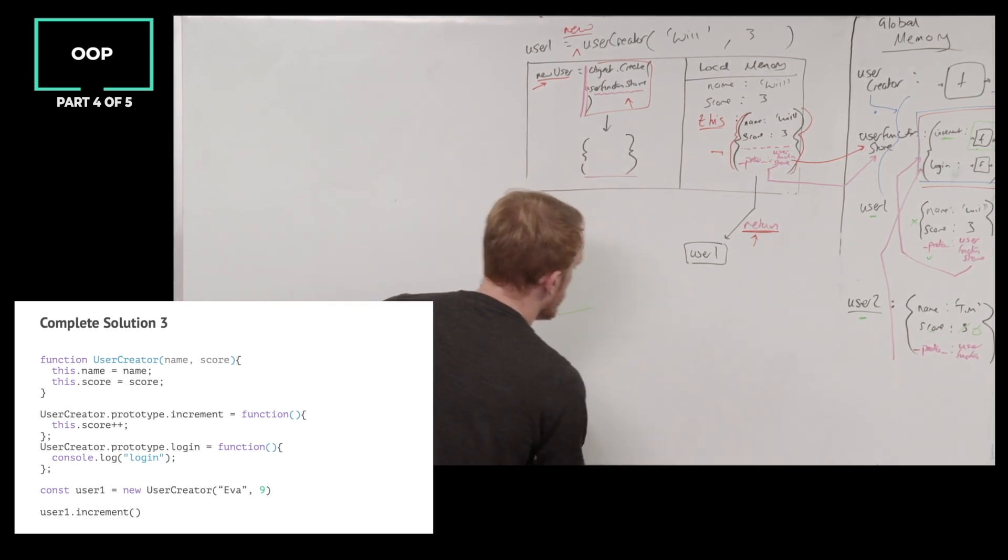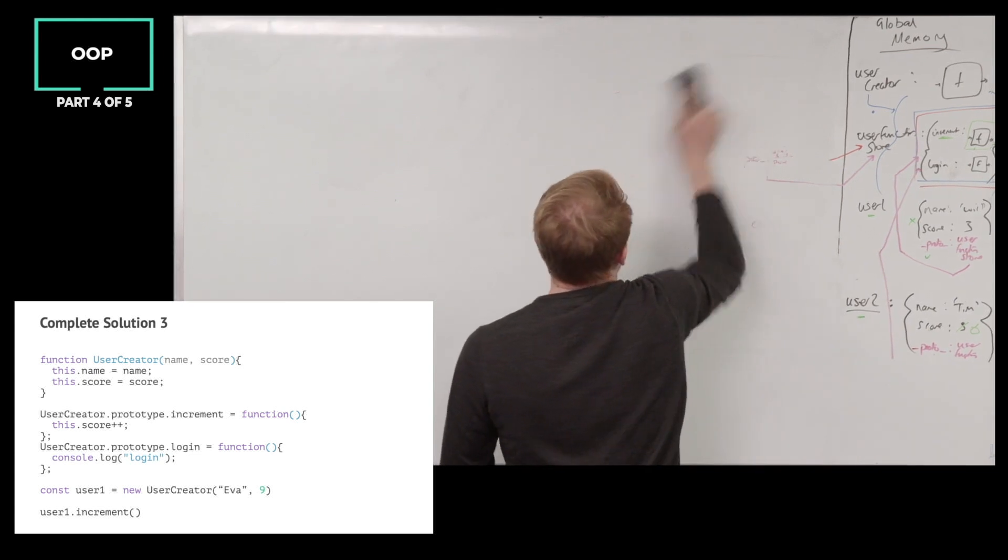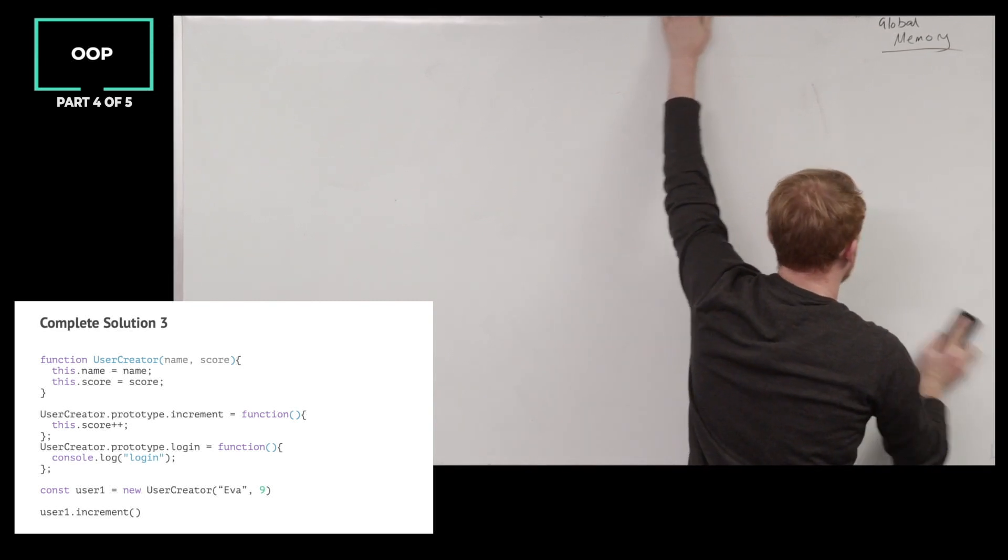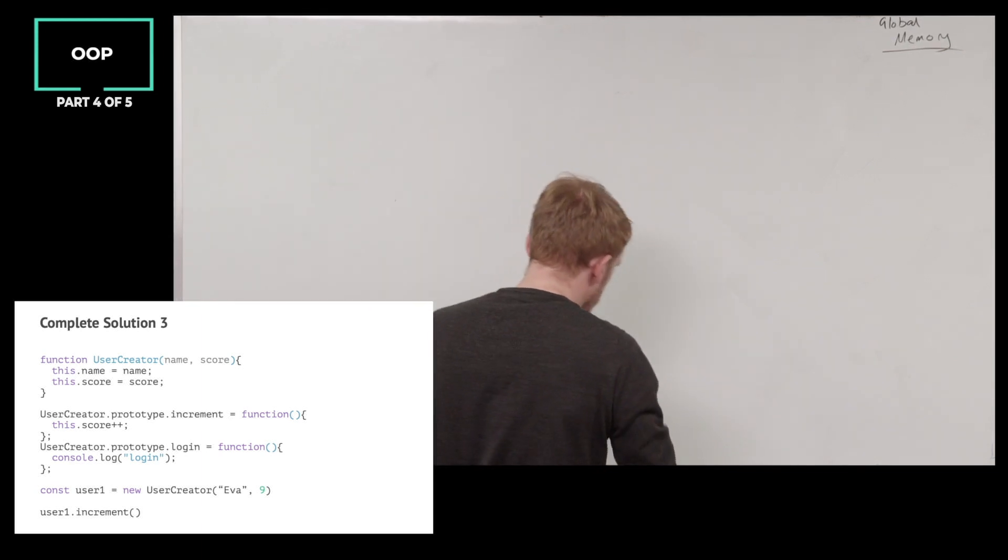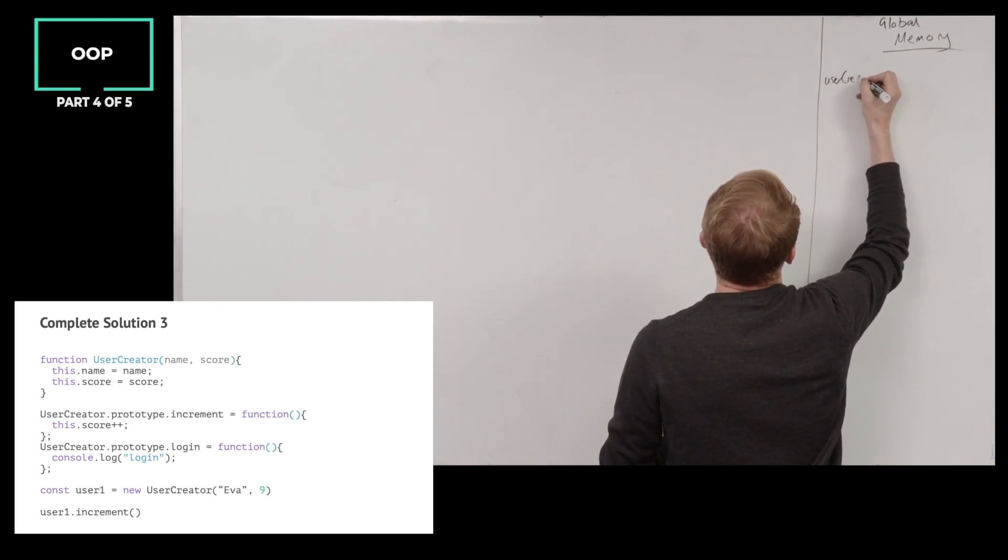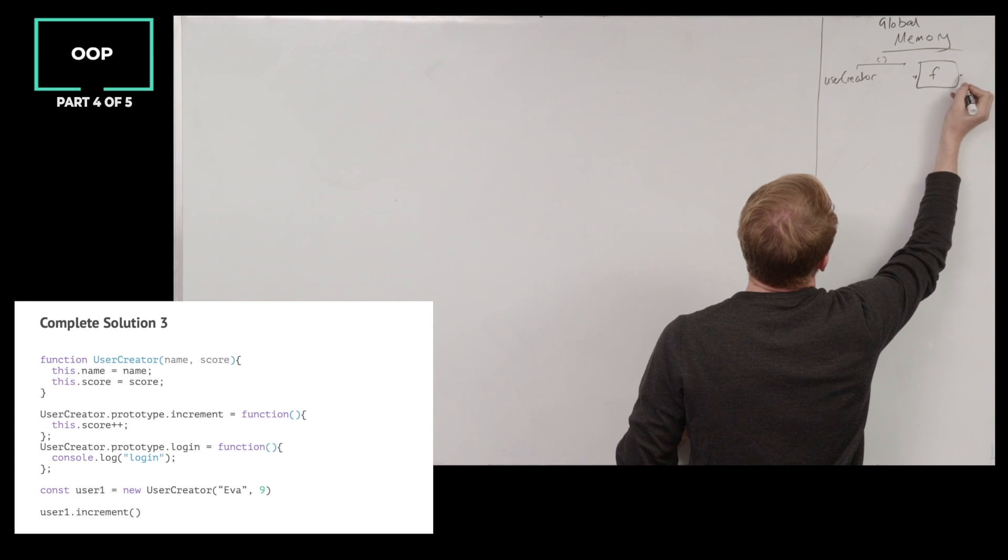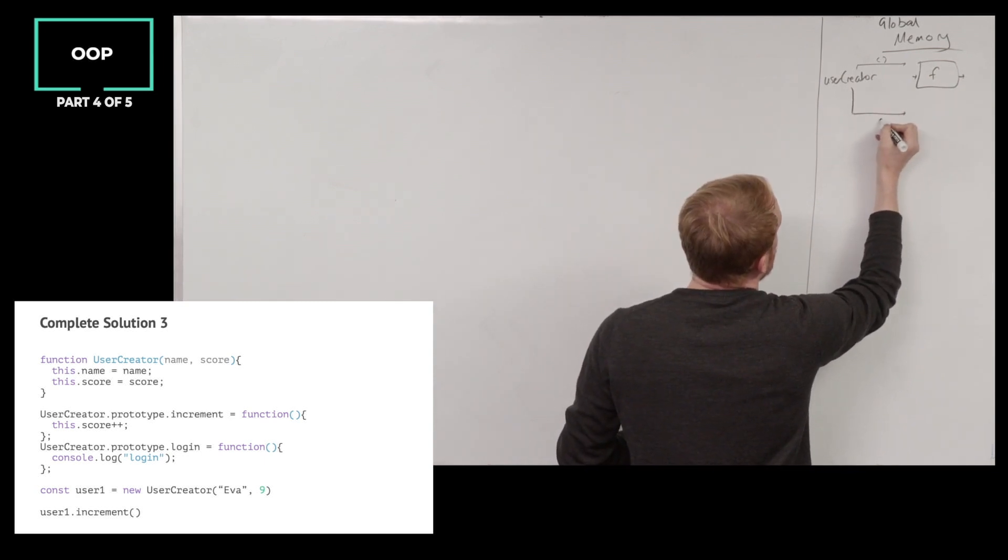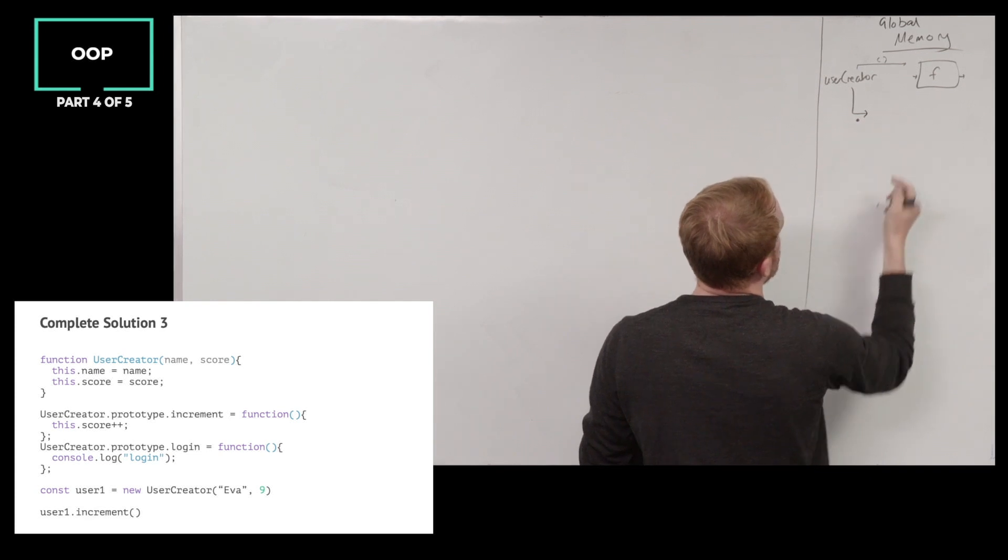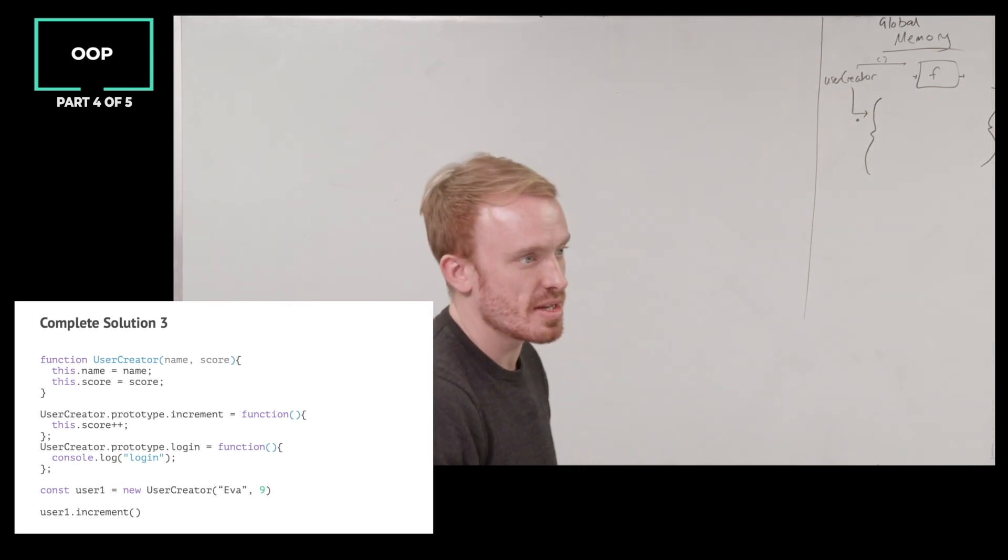So line one, Mijun, talk me through what's happening in line one. We're first declaring a function called user creator. Absolutely. Let's be a little bit more complete on this this time. So whenever we declare a function, what do we... We store it in global memory. Yeah, okay, excellent. But more than that, when I declare the function user creator, I declare its function version. But what else do I declare, Mijun, by default? Also got an object version. It's also an object. Let's make that object. It's also an object if we treat it as an object. Now, what do we say by default that object has on it as a property? It's the prototype.